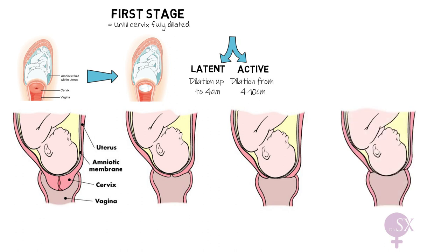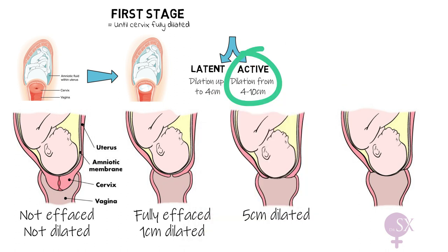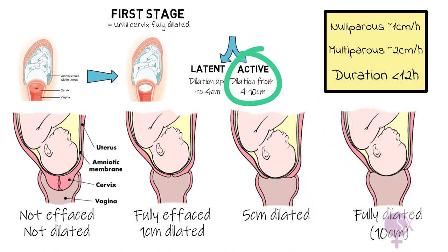Effacement refers to the thickness of the cervix while dilatation refers to how open the cervical os is. Here we can see the cervix is thick and closed — not effaced and not dilated. The cervix first becomes fully effaced as it ripens and prepares for labor, then slowly starts dilating: first one centimeter, then up to five centimeters. Since dilatation beyond four centimeters puts us in the active phase, the cervix then becomes fully dilated ready for the second stage. This process is slower in nulliparous women at around one centimeter per hour versus two centimeters per hour in multiparous women, with the active stage generally lasting less than 12 hours.